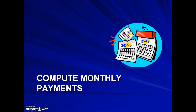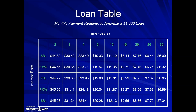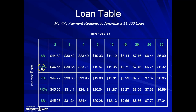Finance unit, section 3: compute monthly payments. To compute a monthly payment, we're going to use a loan table. This table will help us determine the monthly payment required to amortize, or pay off, a $1,000 loan. We'll see how we can modify this number from the table for any amount we borrow. On the table, we have the time in years across the top, and the interest rate on the left-hand column.